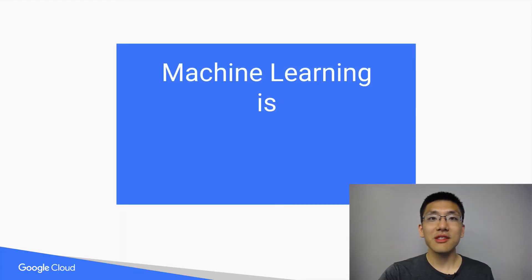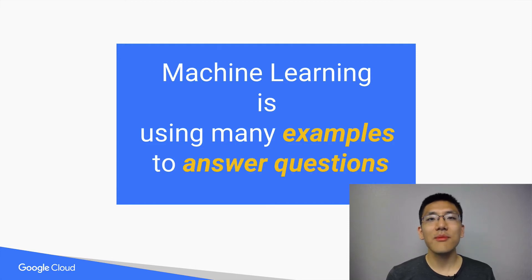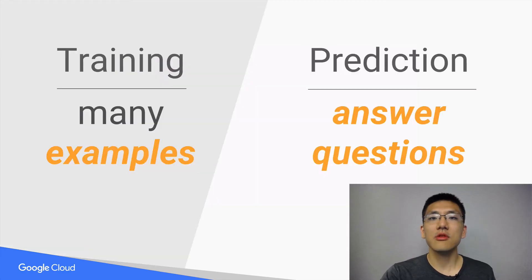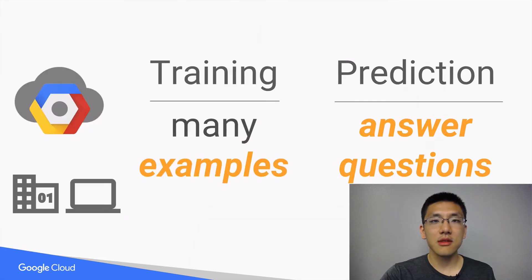The simplest definition of machine learning I can come up with is down to six words: using many examples to answer questions. Let's break that statement up into its two main parts, training and prediction. They are both equally important because your training needs to answer a real question you have and not just provide a high accuracy score. A common approach is to test locally with smaller data sets and then move to the cloud for processing a larger data set.